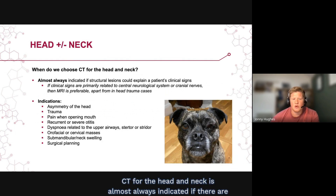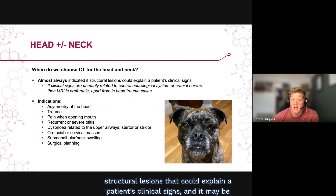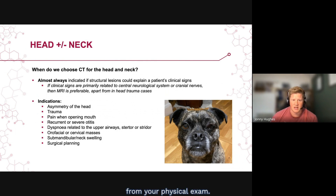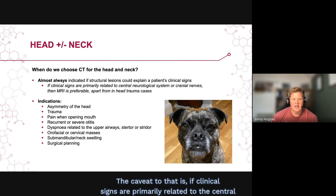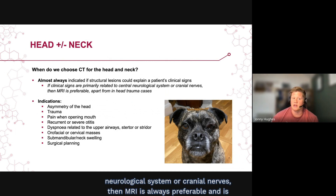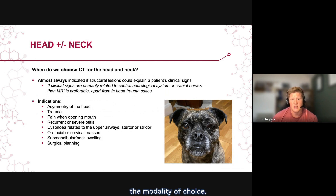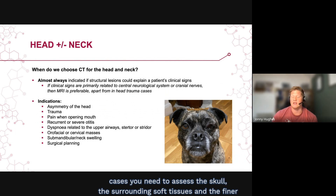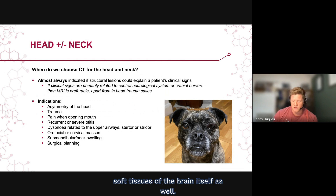CT for the head and neck is almost always indicated if there are structural lesions that could explain a patient's clinical signs, and you may be able to see or feel structural lesions already from your physical exam. The caveat is that if clinical signs are primarily related to the central neurological system or cranial nerves, then MRI is always preferable and is the modality of choice. However, this may not be the case in head trauma, because in those cases you need to assess the skull, the surrounding soft tissues and the finest soft tissues of the brain itself.